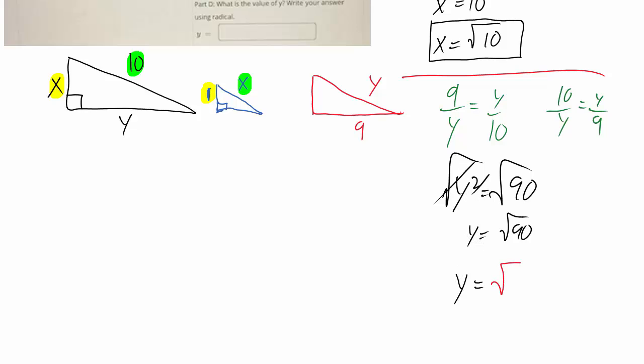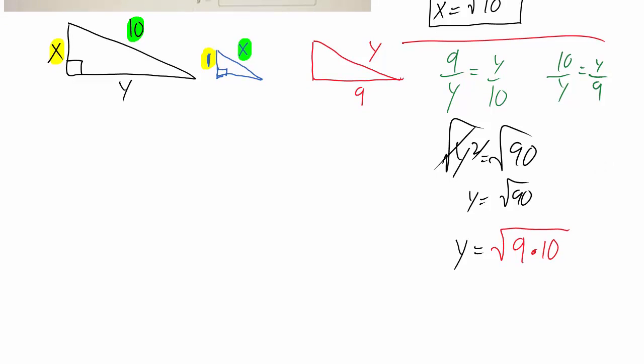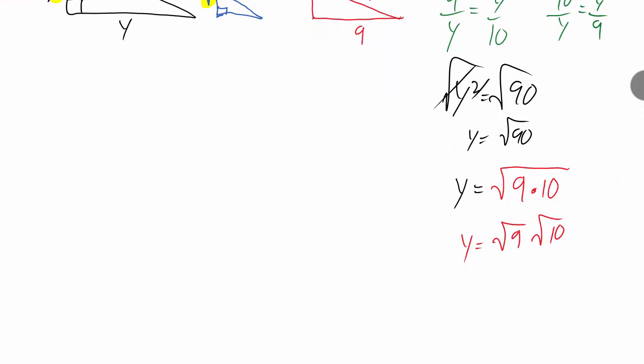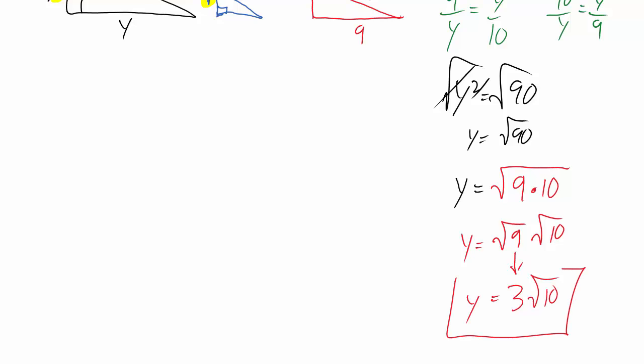But the idea is instead of doing that, I could reduce this radical two ways. Let me turn it back into the 9 times 10 that it was. So leave the 90 as 9 times 10. And it's like, oh wait, I can reduce that radical. y is equal to square root of 9 times square root of 10. That is actually a perfect square. Square root of 10 is nothing special, it's just a really weird decimal. But if you take square root of 9 and put it in your calculator, you get 3. And so this square root of 90 is really 3 times the square root of 10. So that's your answer.